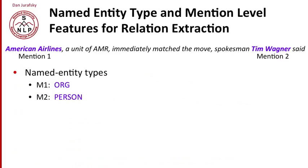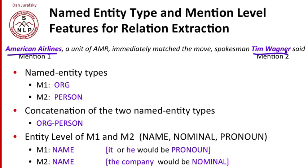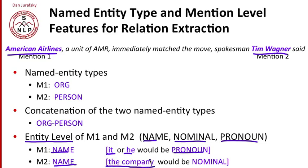Named entity type is very important for relation extraction. We want to know that the first entity, American Airlines, is an organization, and the second mention, Tim Wagner, is a person. We might create a new feature by concatenating those two together — a feature called "org person," which is the concatenation of the two named entity types. We can also add what's called the entity level of the two mentions: whether an entity is a name, a nominal, or a pronoun. American Airlines and Tim Wagner are both names. But if they were "it" or "he," we would call that a pronoun, and if it were a nominal like "the company" — not a proper noun — we would call that a nominal.